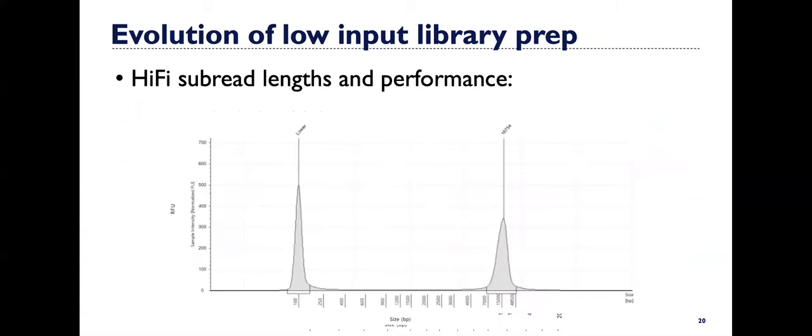This is what a shearing profile would look like of a pretty good sample. You can see here the mean is around 16.7 KB and you see everything's pretty tight between the size range that we're targeting. So you don't see a lot of shouldering.